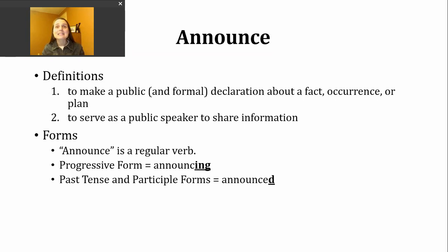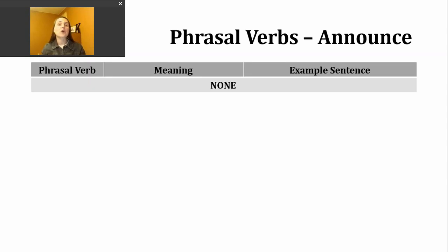You should know that announce is a regular verb. To make the progressive tense, we're going to drop the e and then add -ing to form announcing. The past tense and participle forms are made by just adding d, since this verb already ends with an e. But the base verb announce ends with that s sound, so our past tense -ed ending is going to make a t sound: announced. You might be relieved to know that there are no additional phrasal verbs or different meanings for the verb announce.